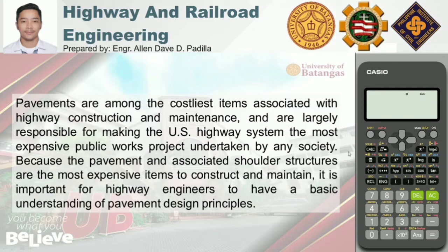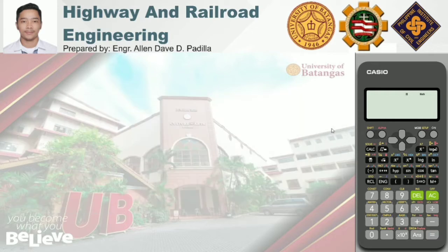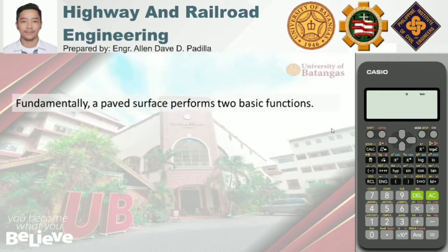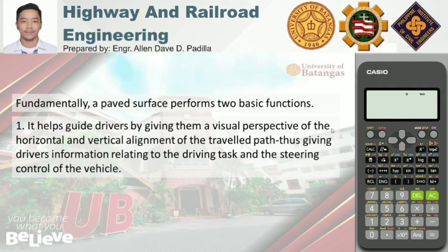So what is the purpose of pavement? Fundamentally, a paved surface performs two basic functions. The first one: it helps guide drivers by giving them a visual perspective of the horizontal and vertical alignment of the traveled path, thus giving drivers information relating to the driving task and the steering control of the vehicles. It serves as a guide for drivers and sets limitations on where the motoring public can drive.